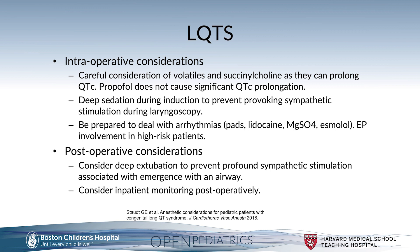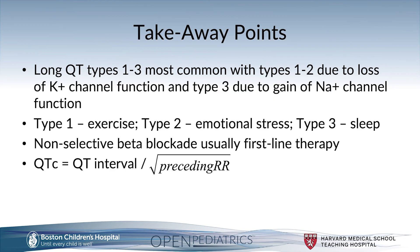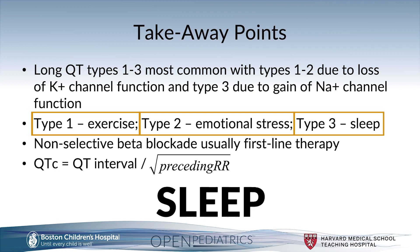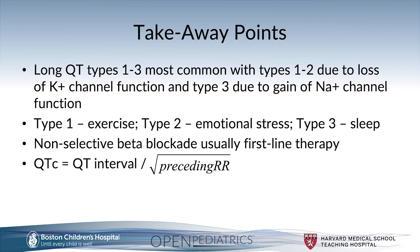From a postoperative standpoint, consider deep extubation to prevent profound sympathetic stimulation associated with emergence with an airway, and consider inpatient monitoring postoperatively. Key takeaways: long QT types 1 through 3 are most common, with types 1 and 2 due to loss of potassium channel ion function, and type 3 due to gain of sodium ion channel function. Remember swim, startle, and sleep for types 1, 2, and 3. Beta blockade is the general first-line therapy. QTc is calculated using Bazett's formula: QT interval in milliseconds divided by the square root of the preceding R-to-R interval in milliseconds.